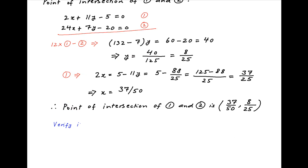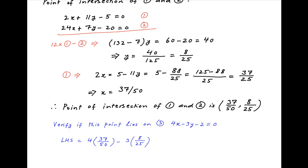Now let's verify whether this point lies on line 3, which is 4x minus 3y minus 2 equal to 0. Substituting the coordinates of the point of intersection of lines 1 and 2 into the equation of line 3, the left hand side is equal to 4 times 37/50 minus 3 times 8/25 minus 2, which equals 74/25 minus 24/25 minus 2, which equals 50/25 minus 2, which equals 0, the right hand side.